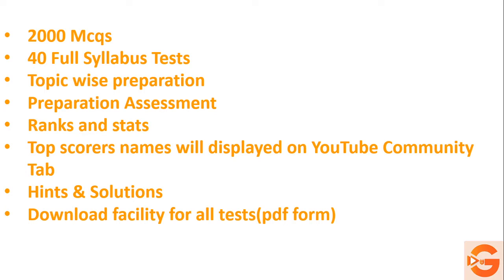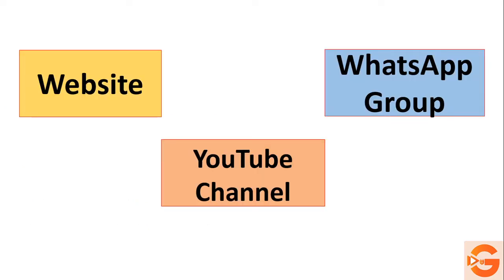If a question was answered wrong the first time, you can take the test again. You have three types of ways to access these tests: the first is the website, the second is the YouTube channel, and the third is the WhatsApp group.